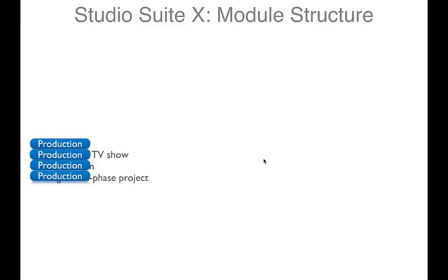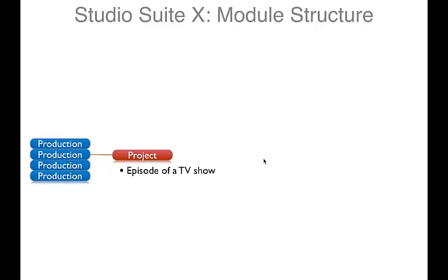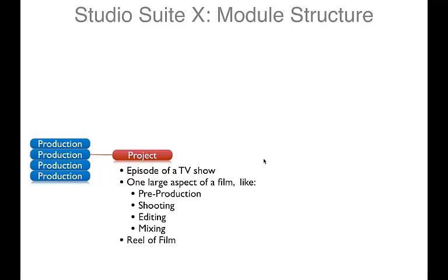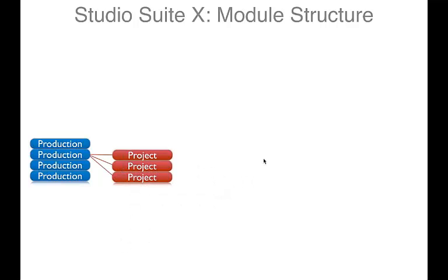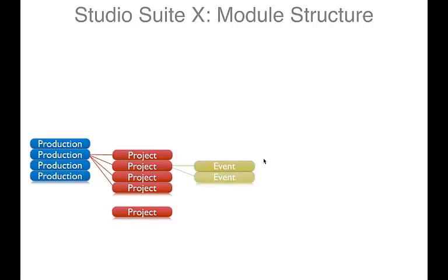Let's talk about the module structure of StudioSuite. At the very highest level we've got a production, which equates to a season of a TV show, a feature film, or maybe a large multi-phase project like a whole campaign or trade show. Within a single production you may have one or multiple projects — a project relates to an episode of a TV show, a large aspect of a film like pre-production or editing, or it could be a standalone one-off job.